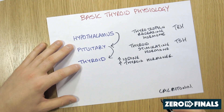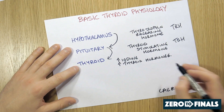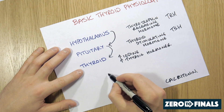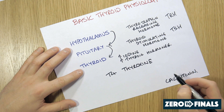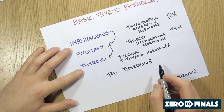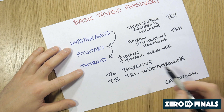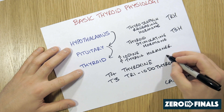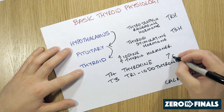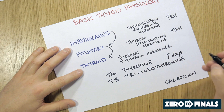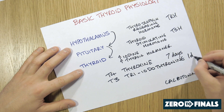The thyroid produces two thyroid hormones. The first one is called thyroxine, and that's T4. The second one is T3, or triiodothyronine. T4 is produced first, and it has a half-life of seven days. T3 has a half-life of only one day.